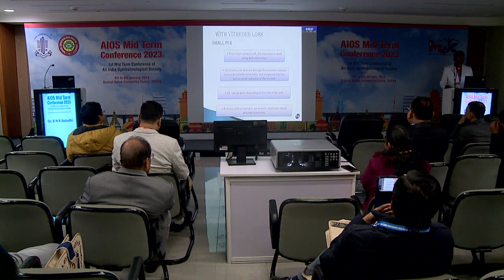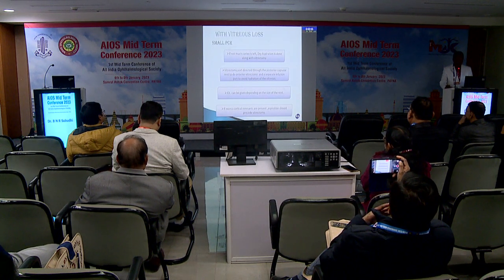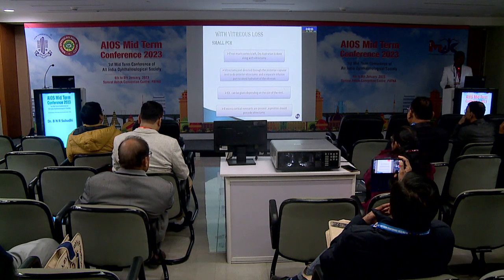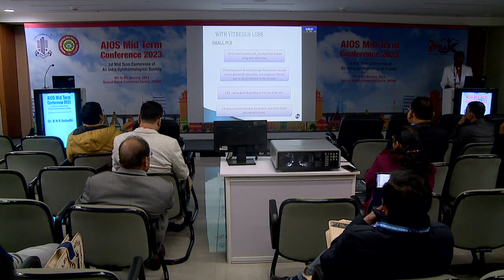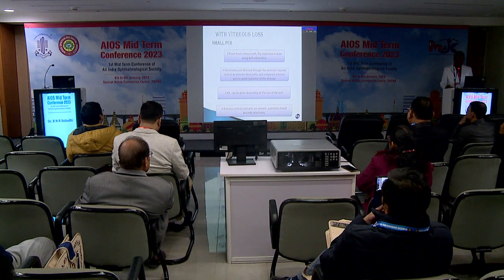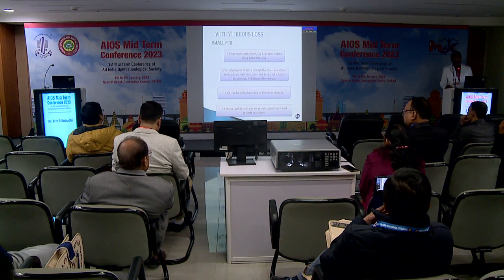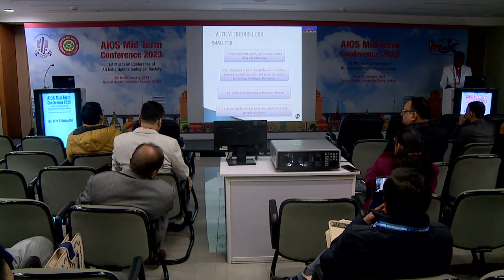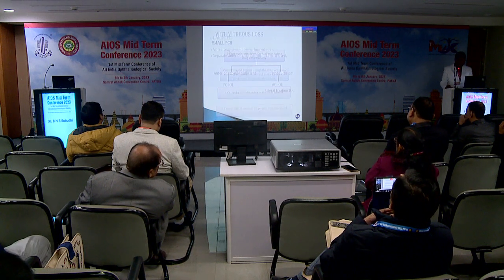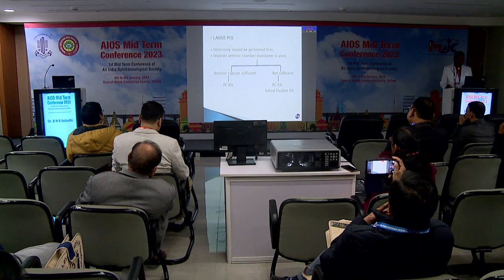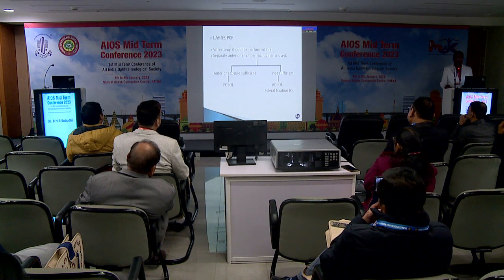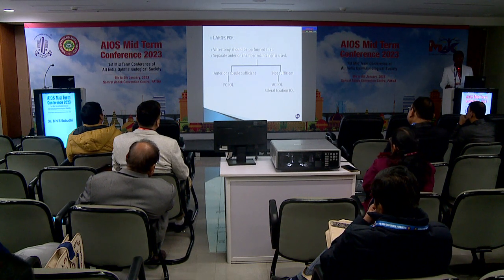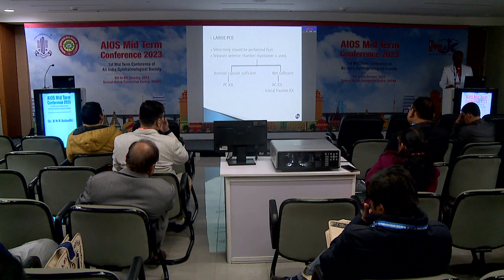But if there's a vitreous loss, it's very difficult. If there's a small PCR with vitreous loss, try to remove as much vitreous as possible from the anterior chamber, clean the pupillary area. If the large PCR, vitrectomy should be performed first — clean the anterior chamber full of vitreous. If you are still in doubt, inject triamcinolone to see that vitreous is cleared from the anterior chamber and pupillary area as well.